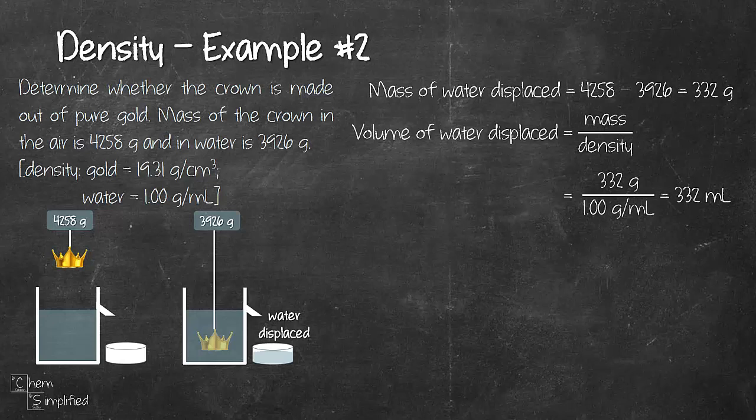Since the water that is displaced out is due to the submerged crown, we can conclude by saying that the volume of the crown is also the same as the volume of the water that is displaced out, which is 332 cm³. Notice I just changed the unit mL to cm³ because I'm now talking about the crown. Crown is a solid object, so I'm using the appropriate unit for solid.